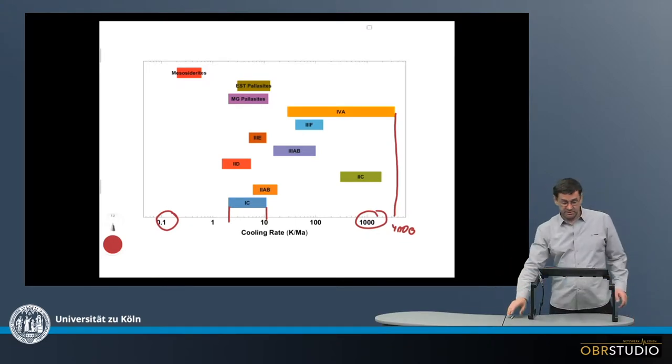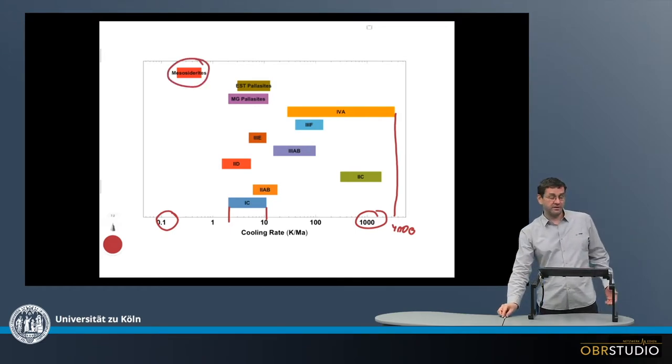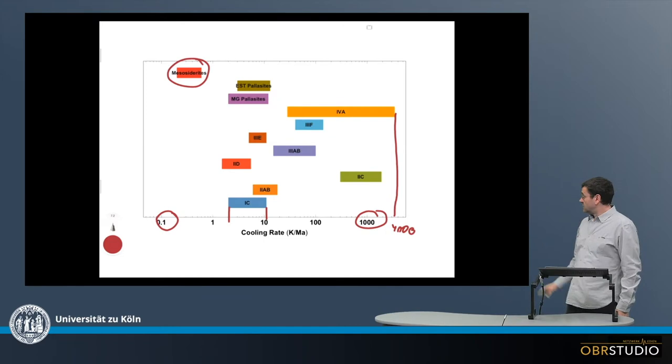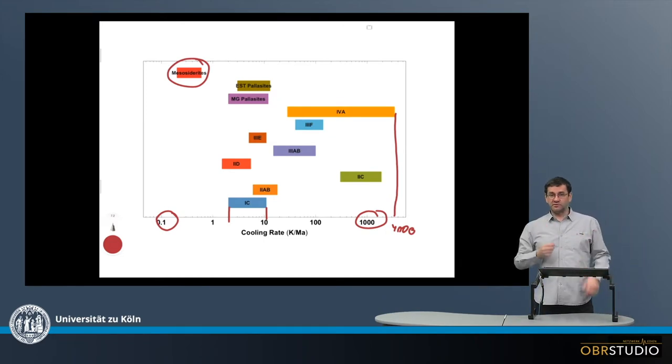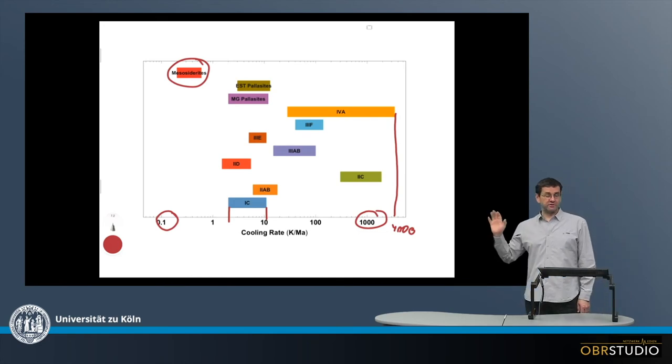Other meteorites, something like mesosiderites up here, are not really iron meteorites. They have very low cooling rates of maybe something like 0.1 to 0.5 Kelvin per million years, so they might have taken tens of millions of years to cool down. And this is the range of cooling rates in iron meteorites.